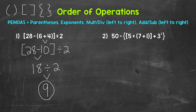Final answer: 9. Let's move on to number 2, where we have 50 minus, and then braces, then brackets, 5 times, and then parentheses, 7 plus 1, end parentheses, end brackets, plus 3 squared, end braces.